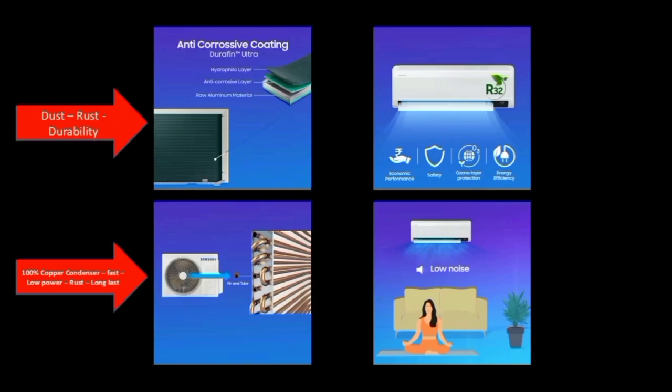During the compressor, we use anti-corrosion coating. It helps prevent dust accumulation and reduces dilution, improving durability over natural conditions. You can use the anti-corrosion coating with a green color finish. The condenser is a 100% copper condenser.